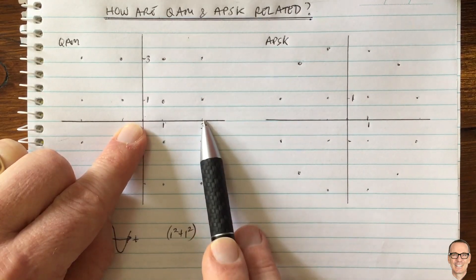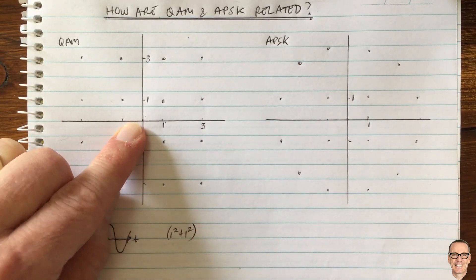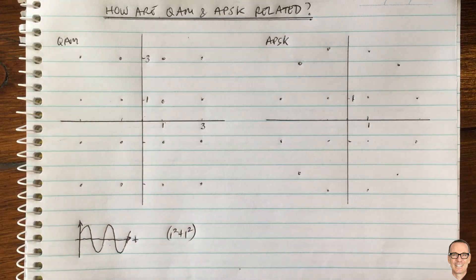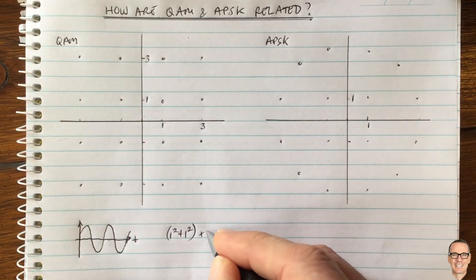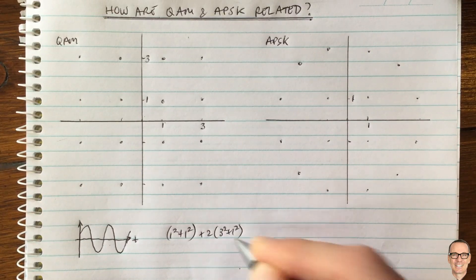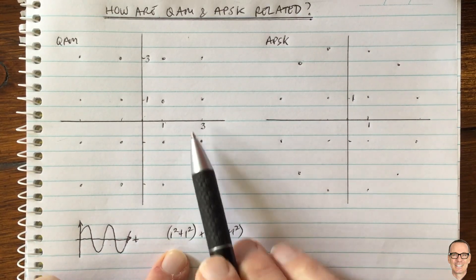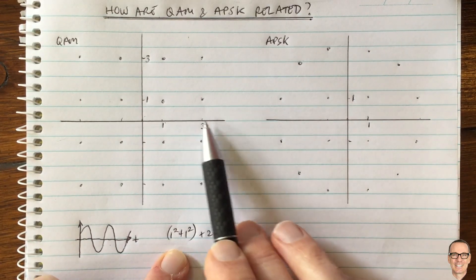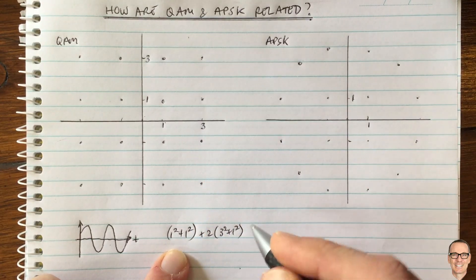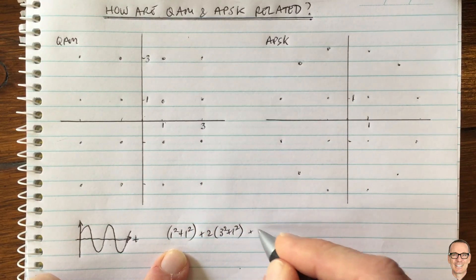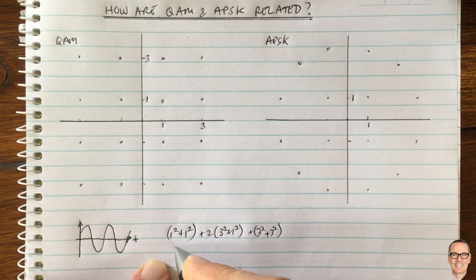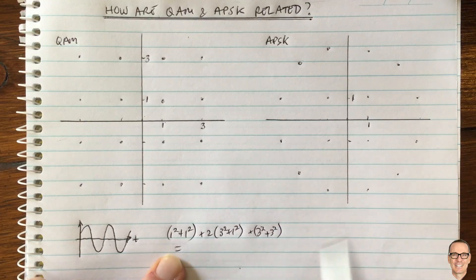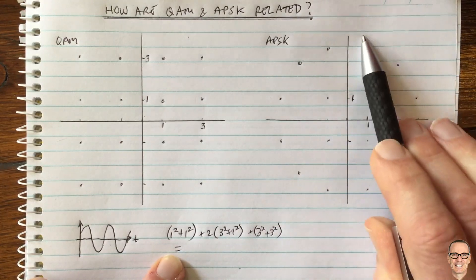There are two such points in this quadrant, so that's plus two times (three squared plus one squared). And then there is the outer corner point, with power three squared plus three squared. So the total QAM quadrant power sum is (1²+1²) + 2×(3²+1²) + (3²+3²), and this has to equal the average power of the APSK constellation.